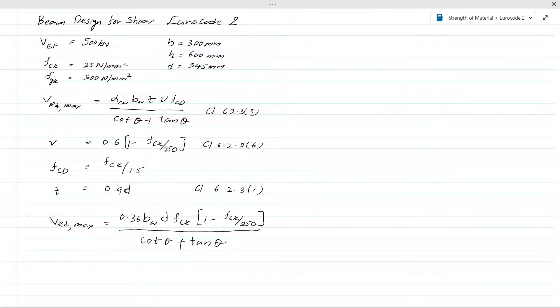In this example we have considered the shear force of 500 kN with cylinder strength of concrete as 25 N/mm², yield strength of reinforcement as 500 N/mm², width of the beam as 300mm, and height of the beam as 600mm.